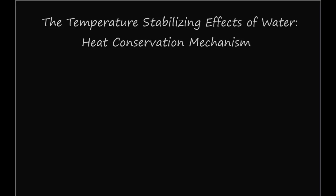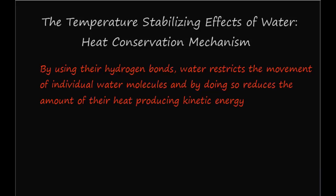A third property making water so important in biology is its ability to stabilize temperatures. Water achieves this effect via two mechanisms: one involves heat conservation while the other involves heat loss. By using their hydrogen bonds, water restricts the movement of individual water molecules and by doing so reduces the amount of heat produced by kinetic energy.